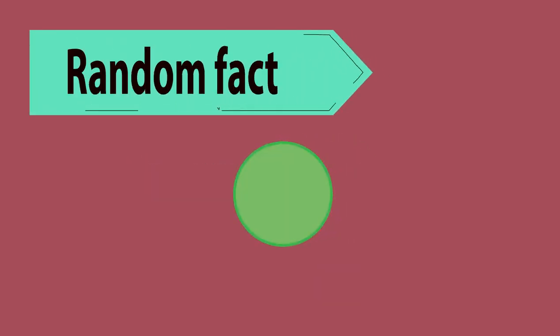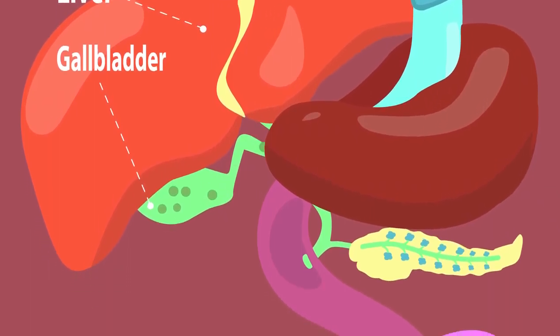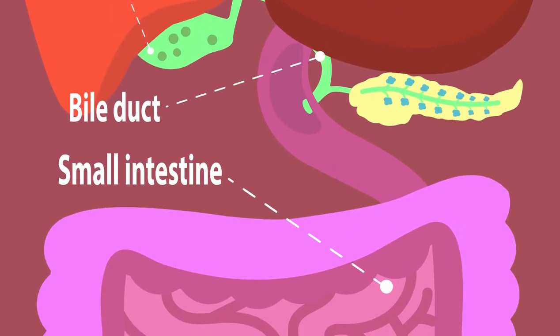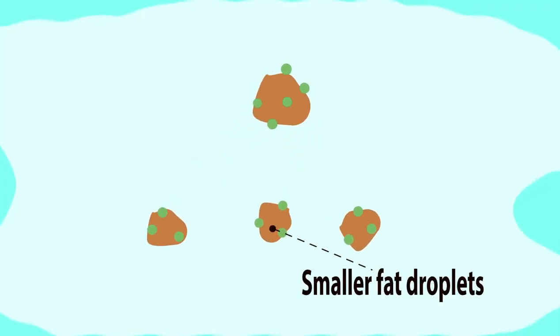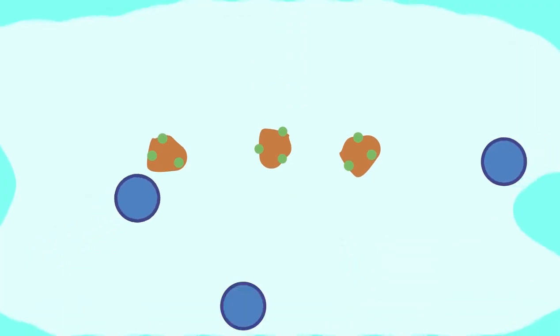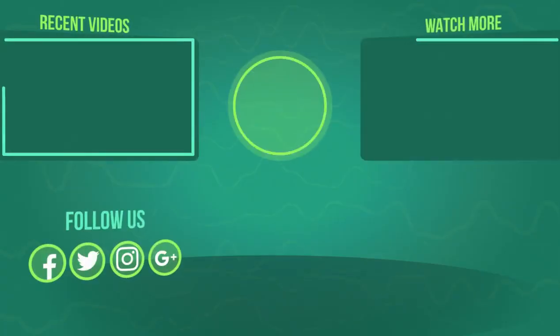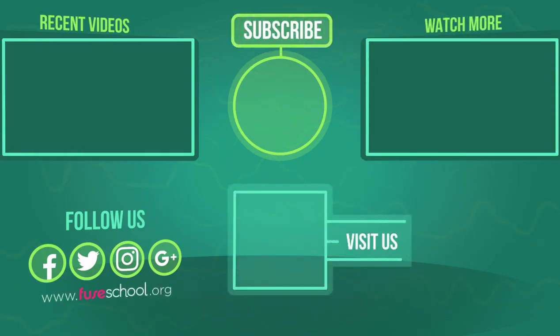In this video we've learned that bile is produced in the liver and stored in the gallbladder. From here it's released down the bile duct into the small intestine where it divides big globules of lipids into smaller droplets. This increases the surface area of lipids available for the lipid-digesting lipase enzymes to work on.